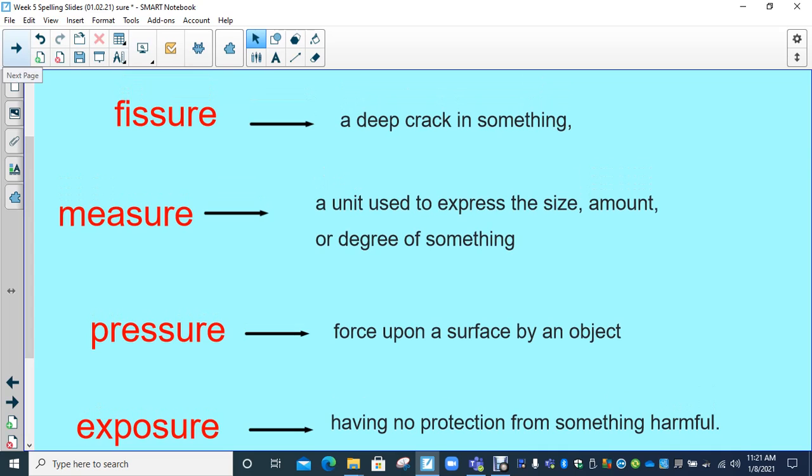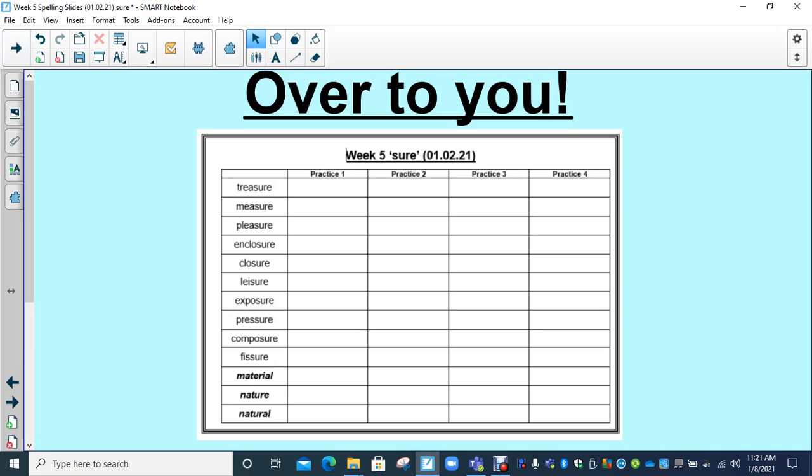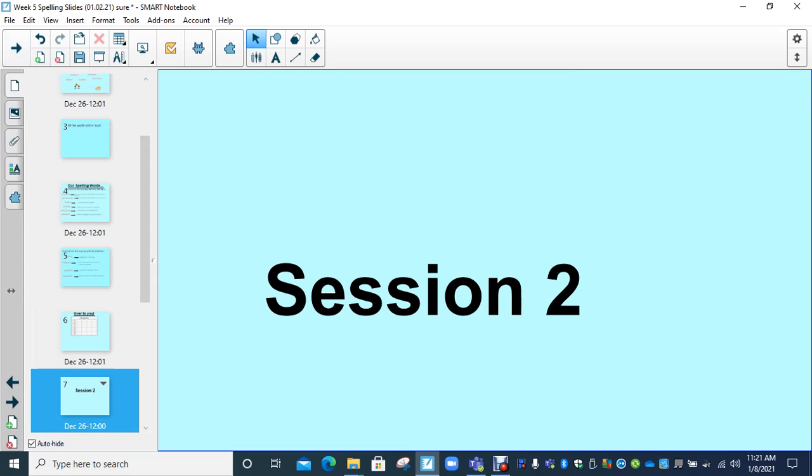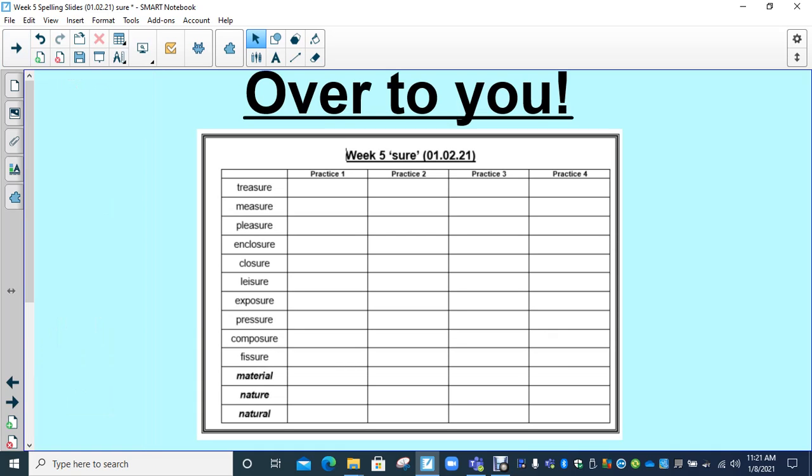Okay, well done, lovely year fours. As usual, we've got our practice one, two, three, and four sheet. Like usual, you can do it whenever you want throughout the week. And we've got our three other words: material, nature, and natural, which are from our year three, four spelling list. So have a go at those as well. And then we should have on the back some lovely other things for you to be doing, all related to those words. So let me know how you get on. If you've got any questions, just give me a shout. Okay, thank you guys. Take care, and we'll see you soon. Bye.